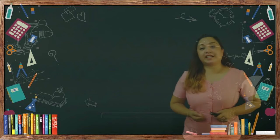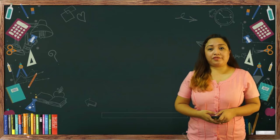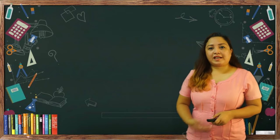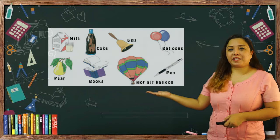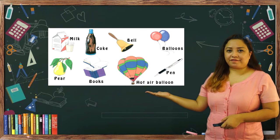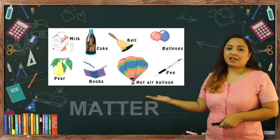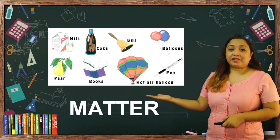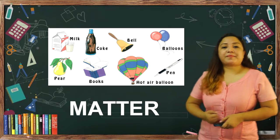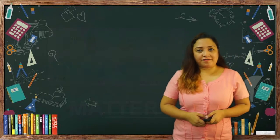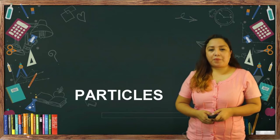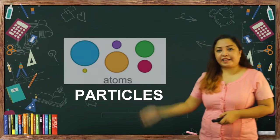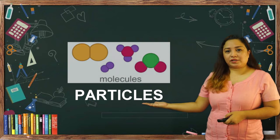With today's lesson, let us have a short review. Take a look at this picture and tell me what are these made of? All of these objects are made of matter. Now, what is matter made of? Matter is made of particles like atoms and molecules.